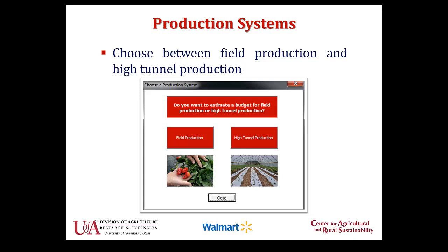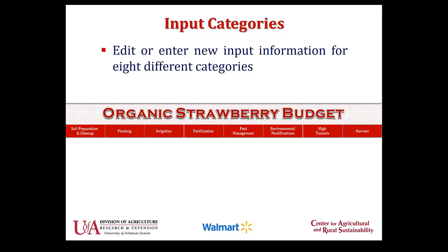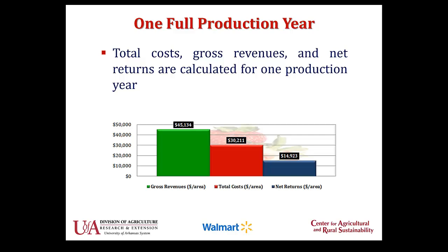The first screen you'll come to will ask you: do you want to do an estimation for field production or for high tunnel production? Then there are the different input categories — soil prep, planting, irrigation, fertilization, pest management, different environmental modifications, high tunnels, and harvest information. When you calculate the budget, you're going to get a bunch of tables, but we've also tried to put some things in graphical form so it's very clear and easy to see — how much you made in revenue, how much your costs were, and your net returns are there in blue. This is for one production year.